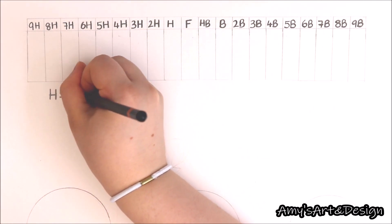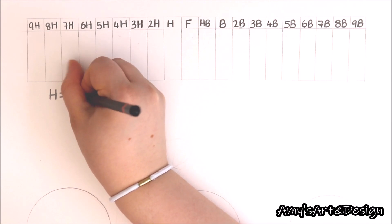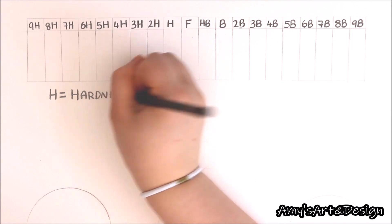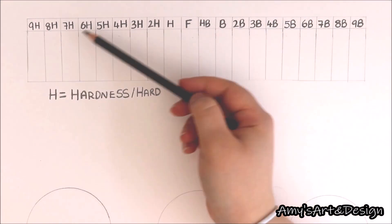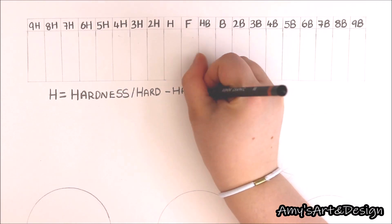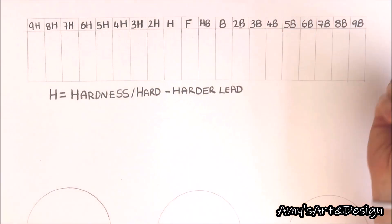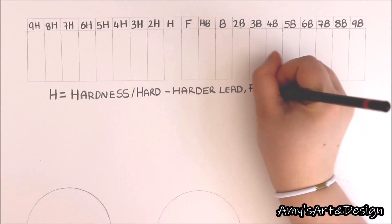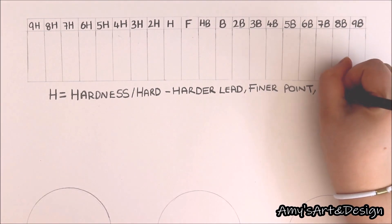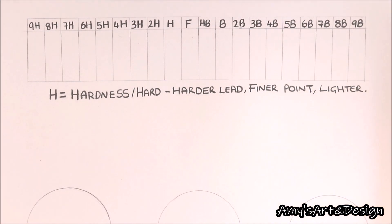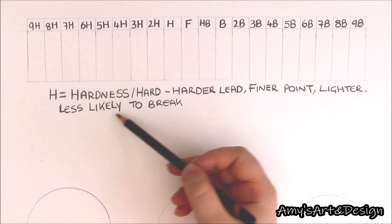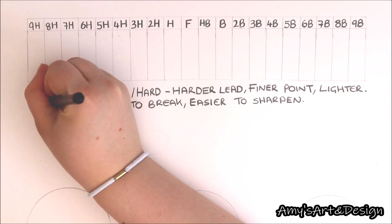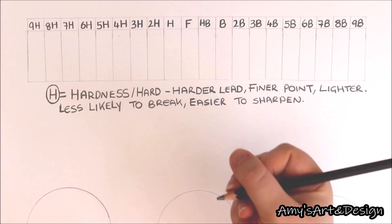The letter H stands for hardness or hard, indicating that the pencil lead is hard. Because the lead is harder, we get lighter shades since there isn't as much saturation or pigment. H pencils also sharpen to a much finer point, making them great for fine details, though they don't cover as much area as B pencils. They're also less likely to break and retain their point much longer than softer lead pencils.